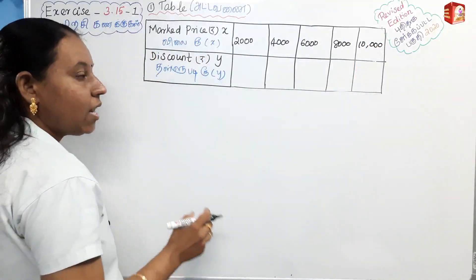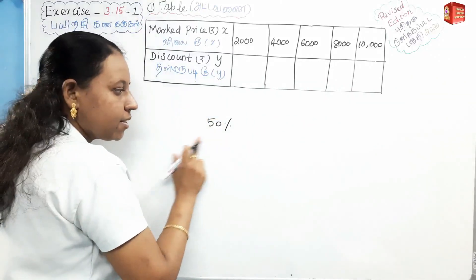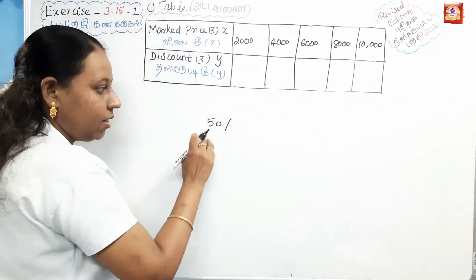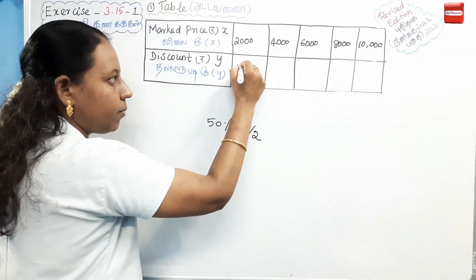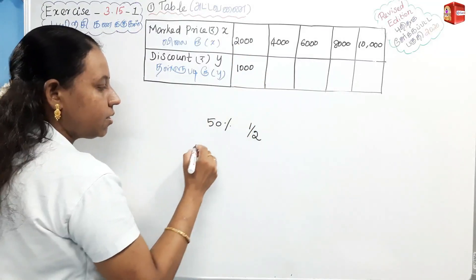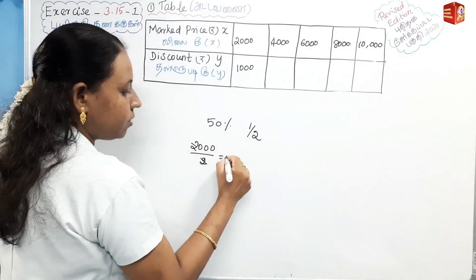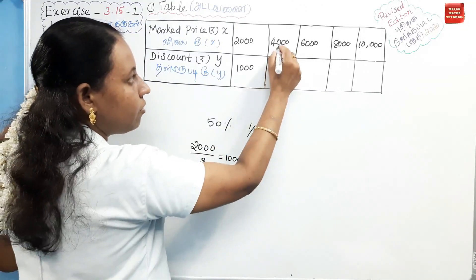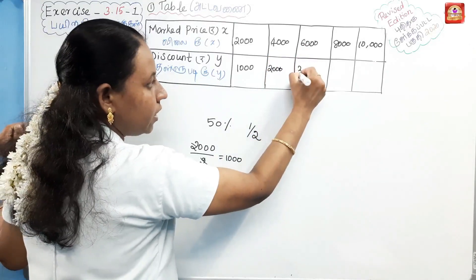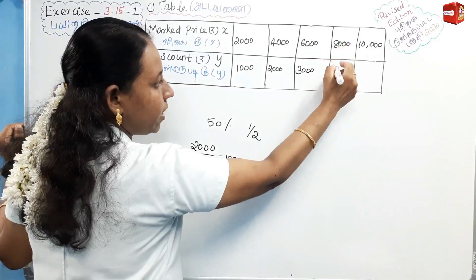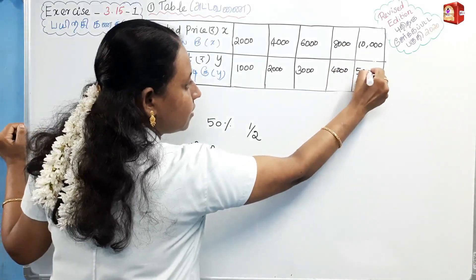Now we apply the 50% discount, which is 1/2. So we divide each marked price by 2. Marked price 2,000 gives discount 1,000. Next: 4,000 gives 2,000; 6,000 gives 3,000; 8,000 gives 4,000; and 10,000 gives 5,000.